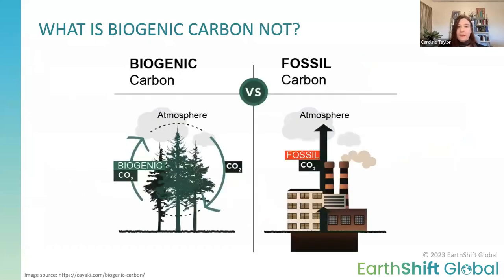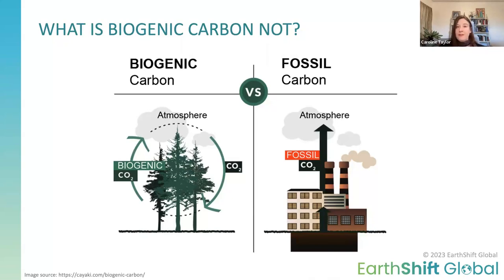Biogenic carbon that is cycling through the atmosphere is distinct from fossil carbon that is bringing carbon from sequestered fossil reserves into the atmosphere. It's an important distinction because at the end of the day, both types of carbon are traceable back to plant matter and animal matter — but the carbon cycle dictates everything that makes the distinction between these two.